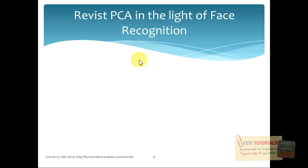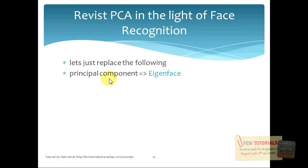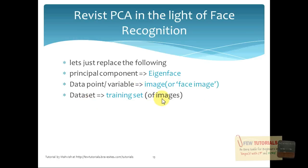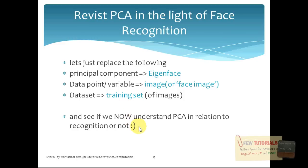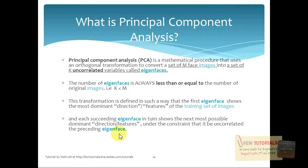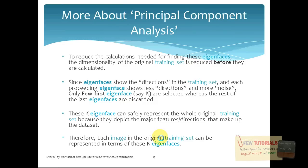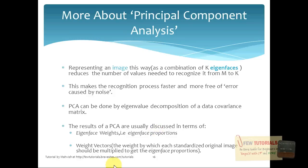I'll just revisit all that we have covered, replacing 'principal component' with 'eigenface', 'data point' or 'variable' with 'image', and 'data set' with 'training set of images', for the sake of understanding its relation to face recognition. I hope it makes more sense now. This tutorial was basically just to throw light on PCA in relation to face recognition. In the next part of level 4b, we will be looking at what the steps are to train the recognizer and to recognize an unknown face using the PCA method. Well, that's all for now — see you in the next tutorial.